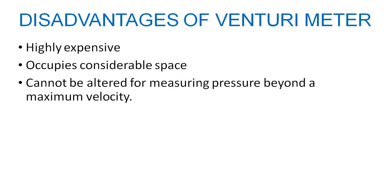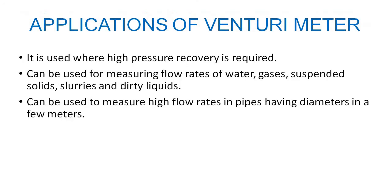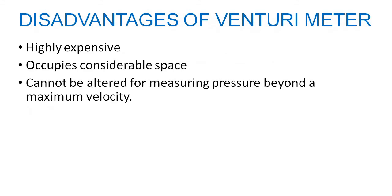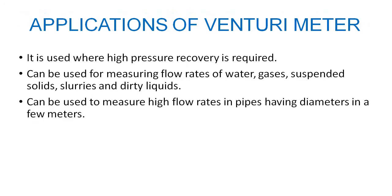Now disadvantages. Highly expensive because this cross section is quite difficult to make. Occupies considerable space. Cannot be altered for measuring pressure beyond a minimum velocity. If the velocity of the flow is very less, there is no pressure difference that will be generated. If you want to measure the pressure, then the flow must be typically high.